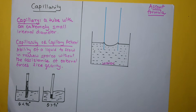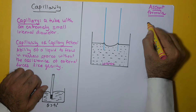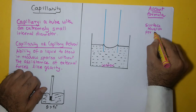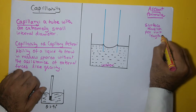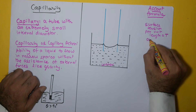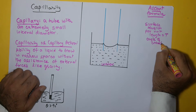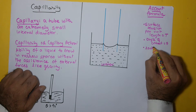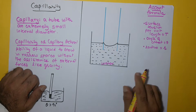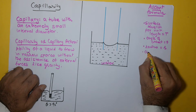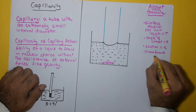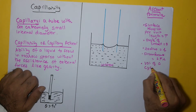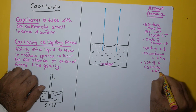Let us identify a few things. Let the surface tension per unit length be equal to T. Let the angle of contact equal theta. Let the radius of the capillary tube equal r. Therefore, the circumference of the tube will be 2πr, and we will also use the volume of a cylinder, which is πr²h.